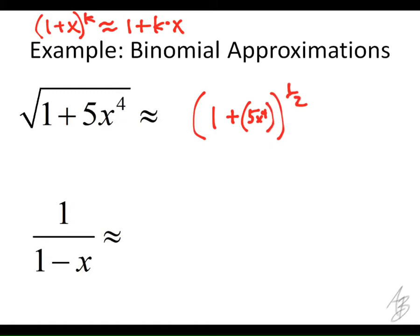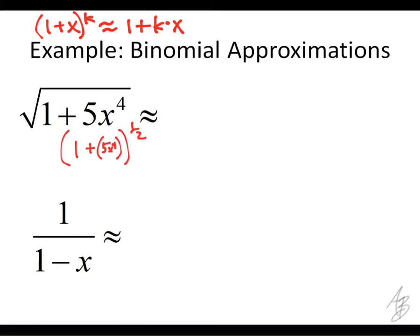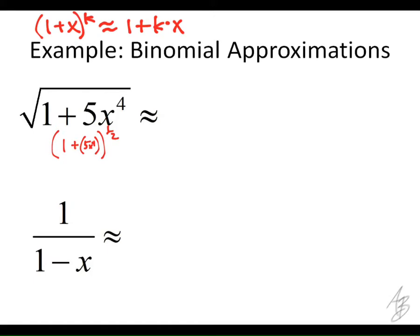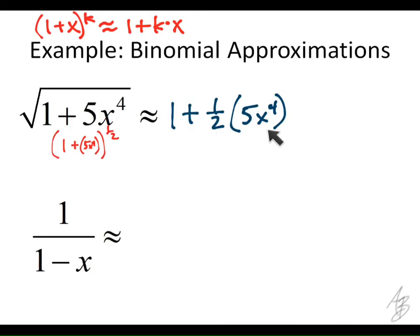So how would I write the linearization of that? We already did the work for it in the previous slide. Like 1 plus one half times 5x to the fourth? Yep. So when x is small, the value of the square root of 1 plus 5x to the fourth is going to be really close to 1 plus half of 5x to the fourth. Notice that this approximation doesn't have anything to do with the square root.